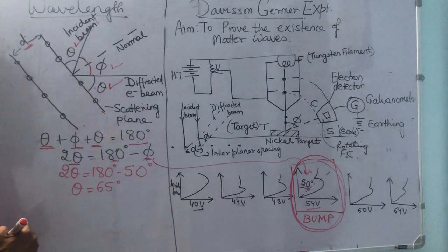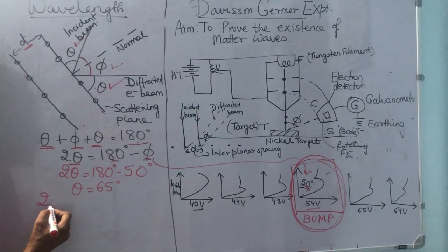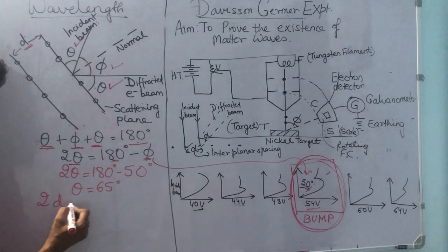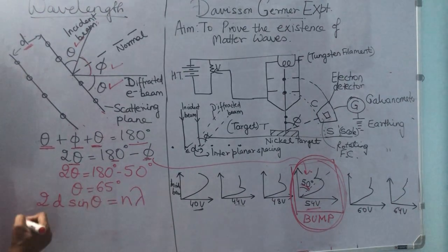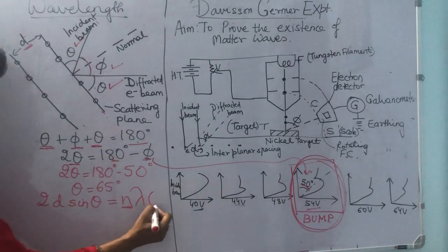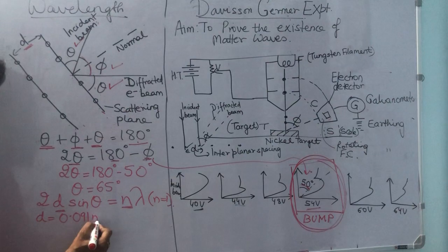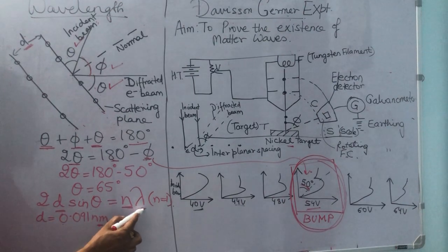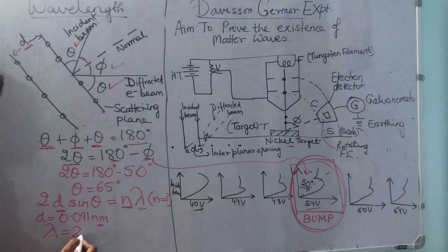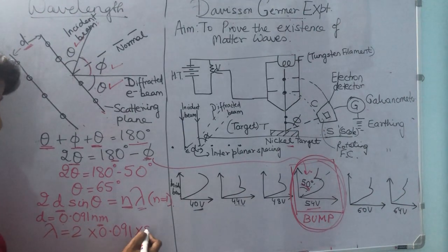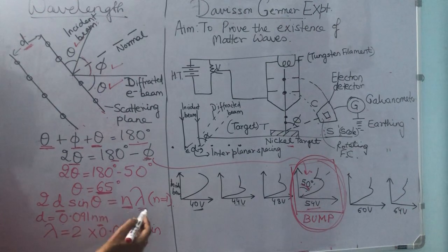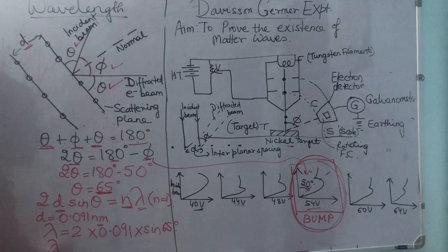Using Bragg's equation for maxima in diffraction pattern: 2D sin θ = Nλ, taking first order N = 1, and interplanar spacing D = 0.091 nm for the nickel target, we substitute these values. Lambda = 2 × 0.091 × sin(65°), which gives lambda equal to 0.165 nanometers.